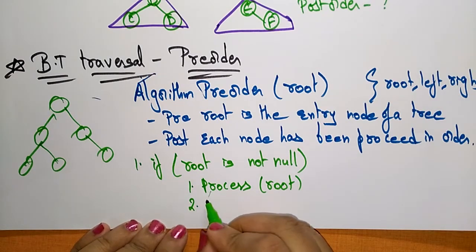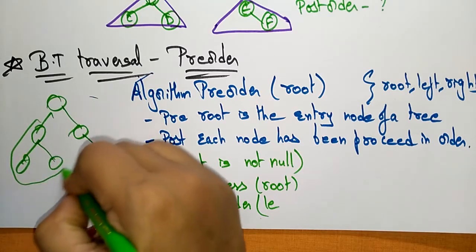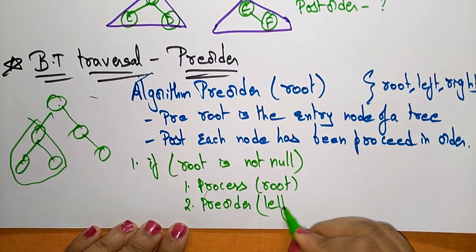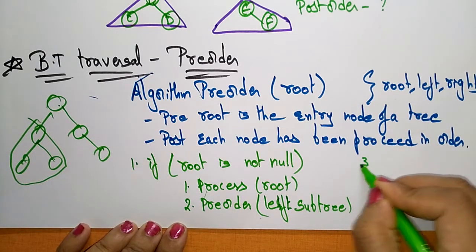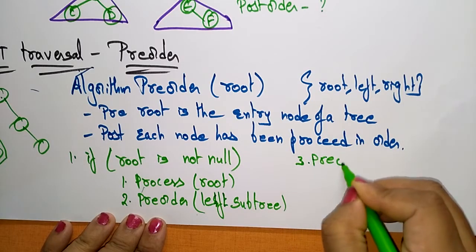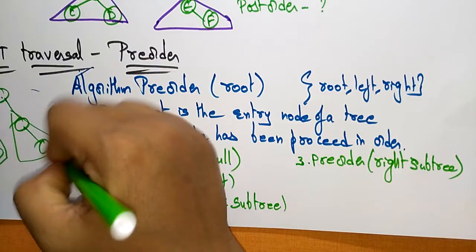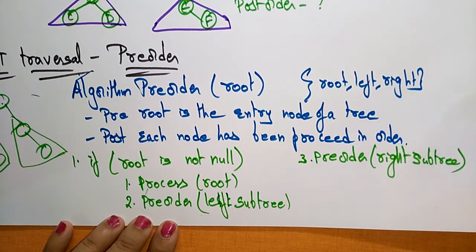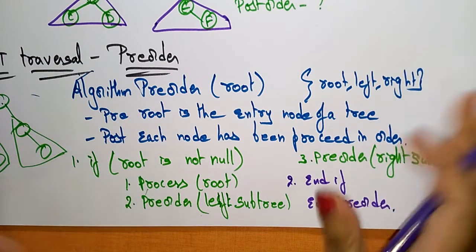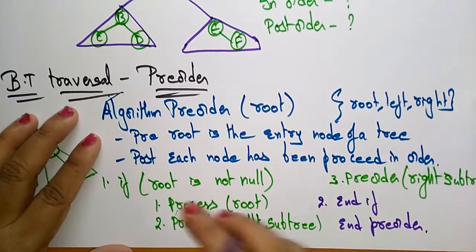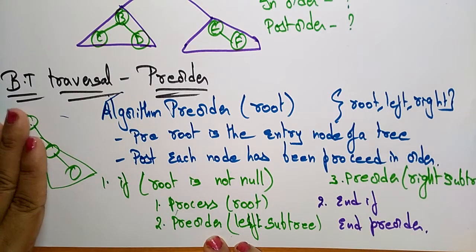First, process the root — because this is pre-order, we visit the root node first. Next, we visit the left subtree. After visiting the left subtree, we visit the right subtree. So: first root, then left subtree, then right subtree. End the loop and end the if condition. This is the algorithm for pre-order traversal.